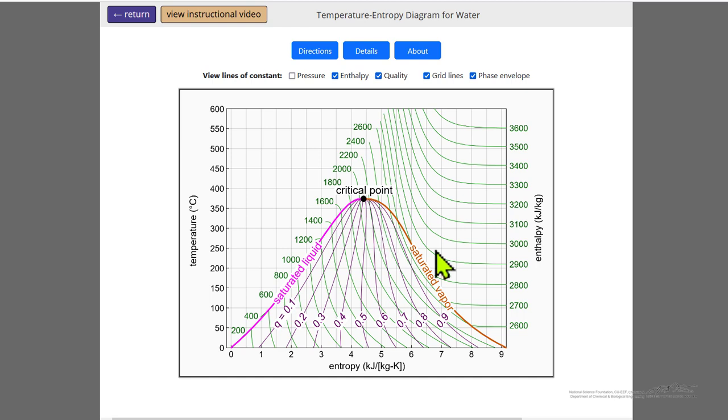For certain processes, like a reversible adiabatic turbine, a temperature-entropy diagram can give us a lot of information about the behavior of the system, and it's useful to be able to understand what this diagram represents.